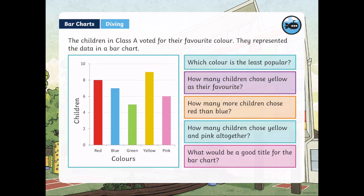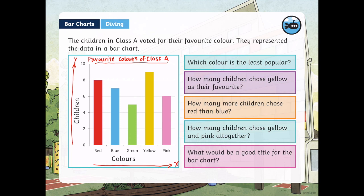Let's review. In the bar chart we have our title — 'Favorite colors of class A.' We have our scale on the y-axis and all our choices on the x-axis. You have to label what your choices were and label who was asked the question. Make sure you choose a scale — you could go up by twos or up by ones. It depends on what data we have, and we have to find the most appropriate scale. We're going to try out a few activities, and if you have any questions you can find us on Seesaw.